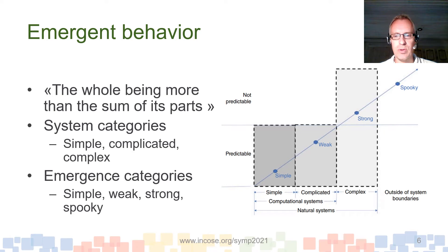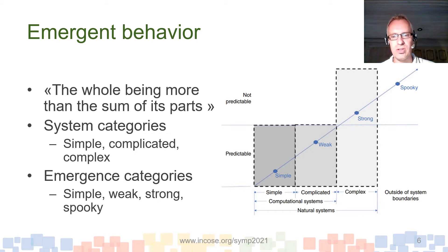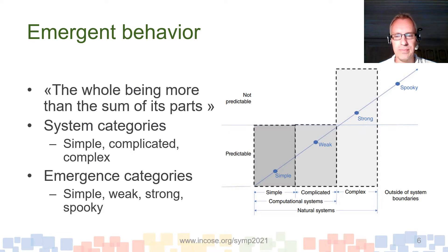So what are these emergent behaviors? The main idea is that the whole is more than the sum of its parts. When you integrate different components into a subsystem, or different subsystems into a system, you create synergies due to interactions that give rise to behavior you have not planned for. These behaviors can be both known and unknown, and both desired and undesired. They will emerge when you combine different systems.